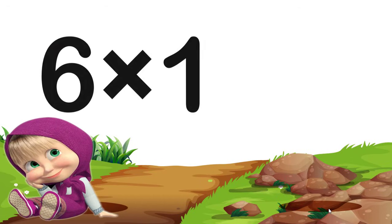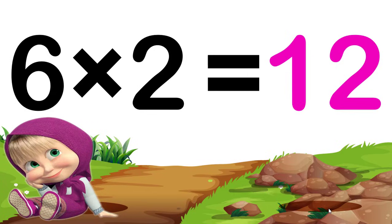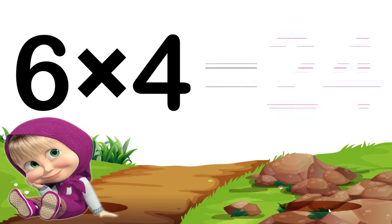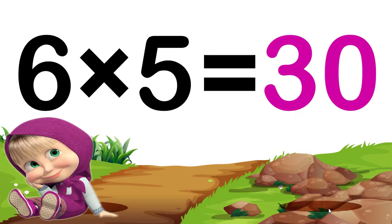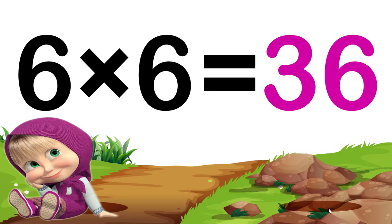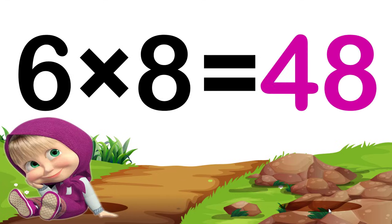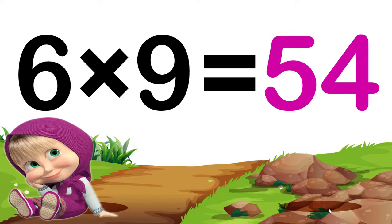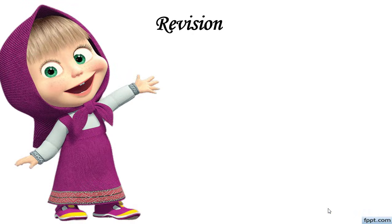Table of 6: 6 ones are 6, 6 twos are 12, 6 threes are 18, 6 fours are 24, 6 fives are 30, 6 sixes are 36, 6 sevens are 42, 6 eights are 48, 6 nines are 54, 6 tens are 60. Now let's revise again children.